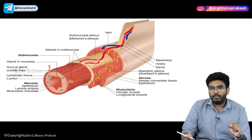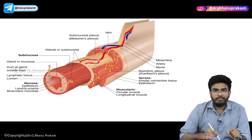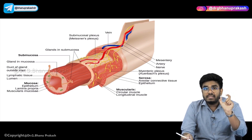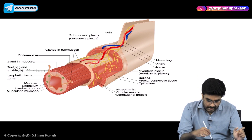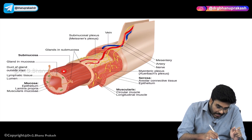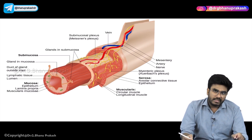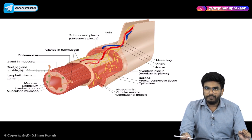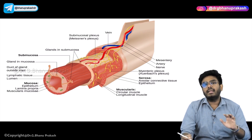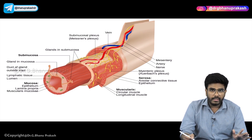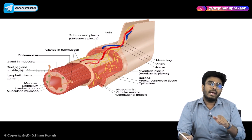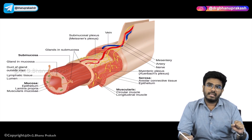Now, mucosa is further divided into: the epithelial layer, lamina propria, and muscularis mucosae. Note that muscularis mucosae is different from the actual muscularis layer. The muscularis layer helps in peristalsis and GI motility, but muscularis mucosae has no role in GI motility. Never confuse them — muscularis mucosae is part of the mucosal layer, while muscularis is a separate layer that helps in peristalsis.